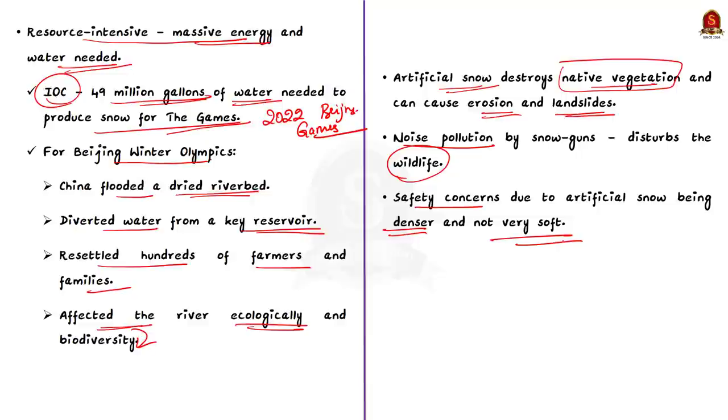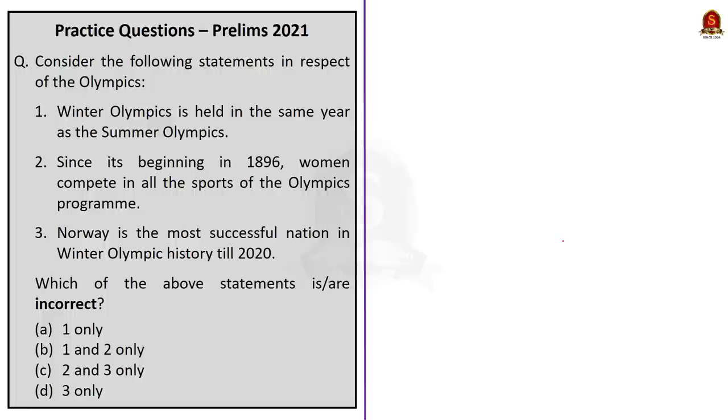In this discussion, we saw about the origins of Olympic Games, how summer and winter Olympic Games are conducted. Then, we saw some important points about 2022 Beijing Games and some issues associated with the games. With this, let us conclude this discussion and take up the next news article.